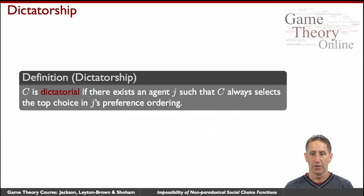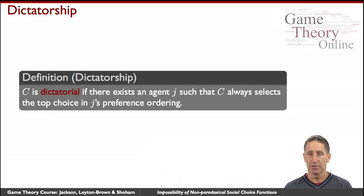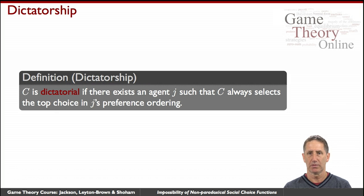The last notion, dictatorship, is similar to what you see in social welfare functions. It simply says that a social choice function C is dictatorial if there is some agent whose top choice is always the social choice.